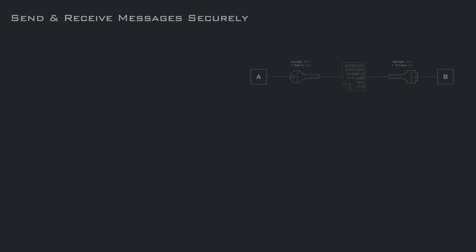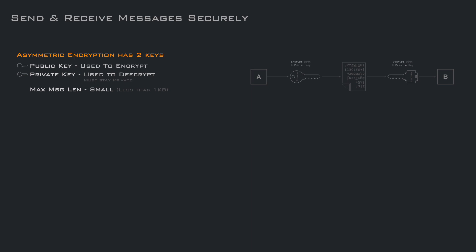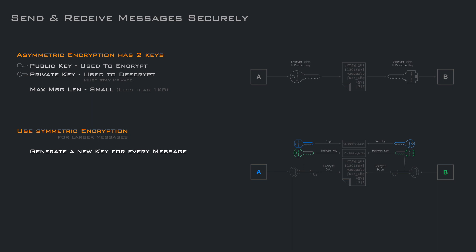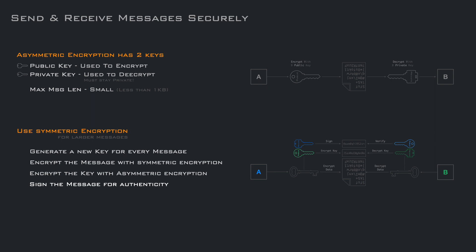That's it. Now you can send and receive messages securely. The things to remember are: asymmetric encryption has two keys — a public key that can be publicly shared and is used by the sender to encrypt the message, and a private key that should stay where it was generated. The maximum length of the message that can be encrypted with asymmetric encryption is proportional to the key size, so it's small. For larger messages, we mix symmetric and asymmetric encryption: a new symmetric key is generated for every message, the message is encrypted using symmetric encryption, then asymmetric encryption is used to encrypt that key. If we also want to verify the authenticity of the sender, the sender can sign the message using its private key. The receiver decrypts the symmetric key with its private key, decodes the message with the decrypted key, and verifies the signature using the public key of the sender.